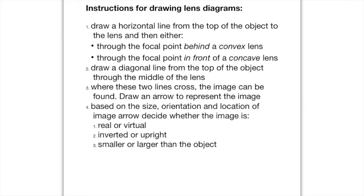I just want to run through the instructions for how to draw the lens diagrams. First of all, remember that the object — they'll give you that as a little arrow. To begin your lens diagram, you want to draw a horizontal line from the top of that object arrow to where it hits the lens. If you've been given a convex lens, you then want to take a straight line from where it's hit the lens down through the focal point, which will be behind the lens. If you've been given a concave lens, you're going to take the line in front of the lens and through the focal point there. It will become clear shortly.